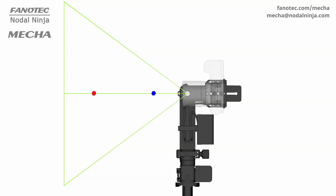Hi! In this video, we will talk about the parallax error in panoramic photography. In panoramic photography, the camera must be rotated around a virtual point in the lens, called the No Parallax Point, or NPP, to avoid parallax errors in the stitched panorama.